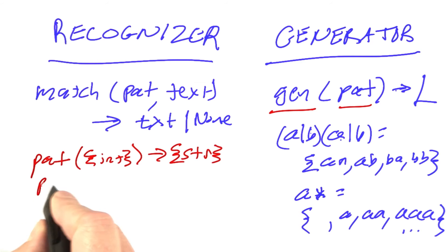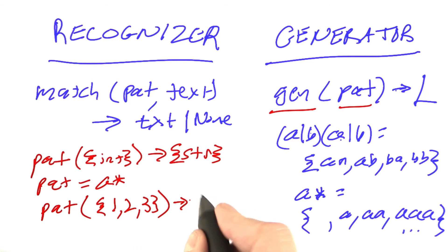For example, if we define pattern to be A star and then we apply pattern to the set {1, 2, 3}, then that should return all strings which are derived from the pattern that have a length of 1, 2, or 3. That should be the set {'A', 'AA', 'AAA'}.